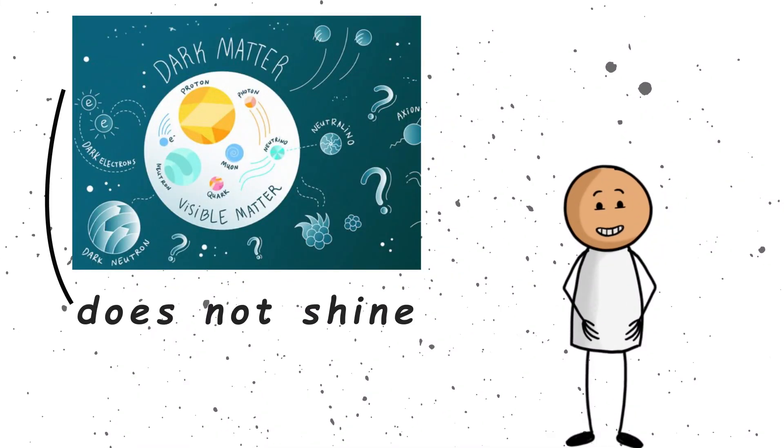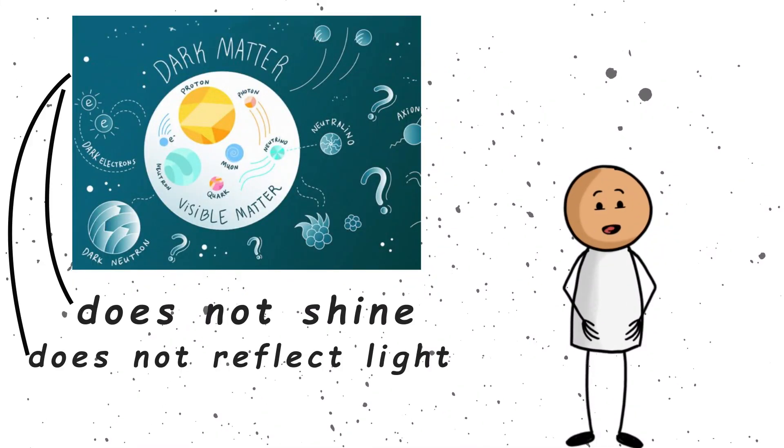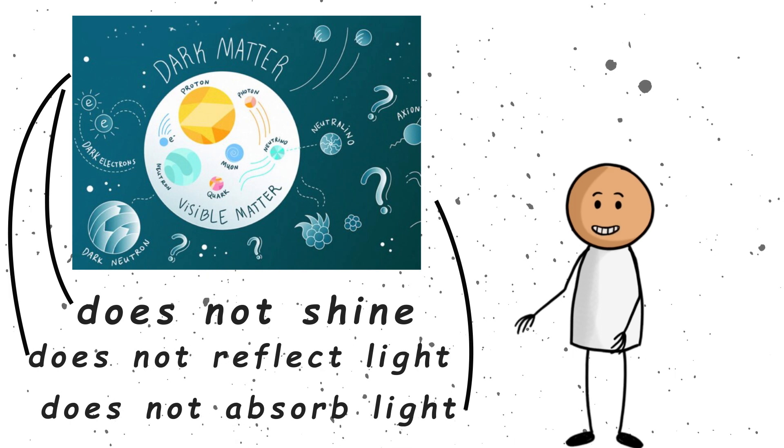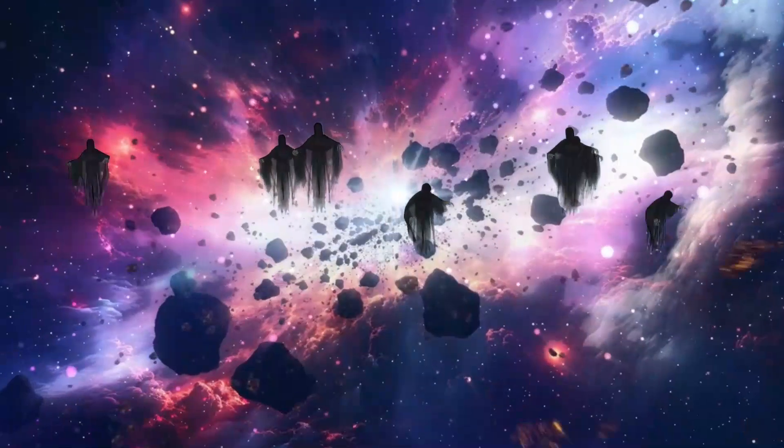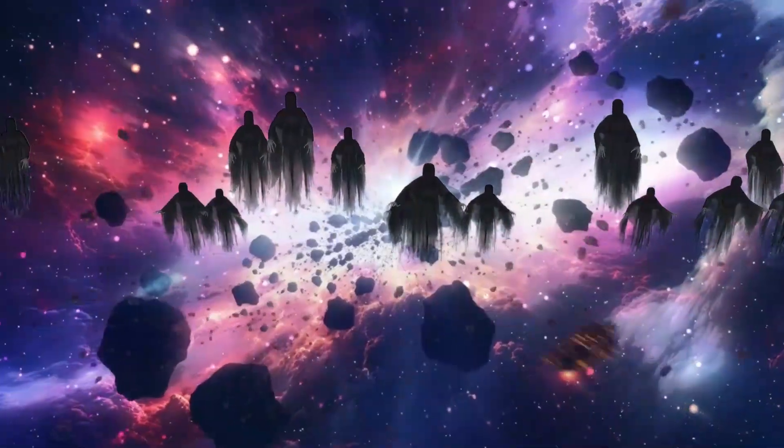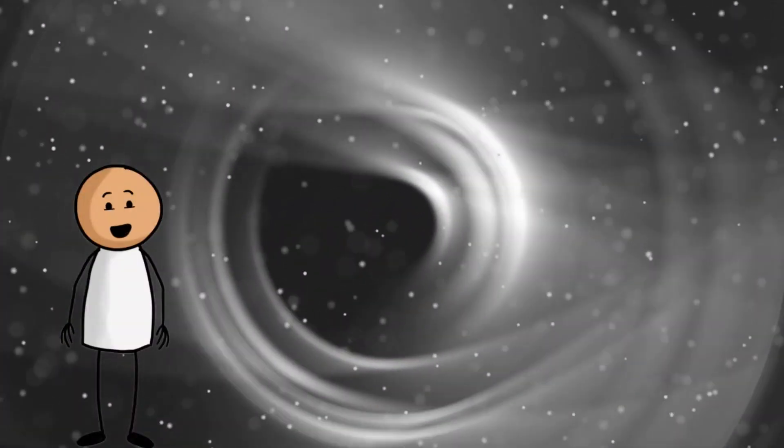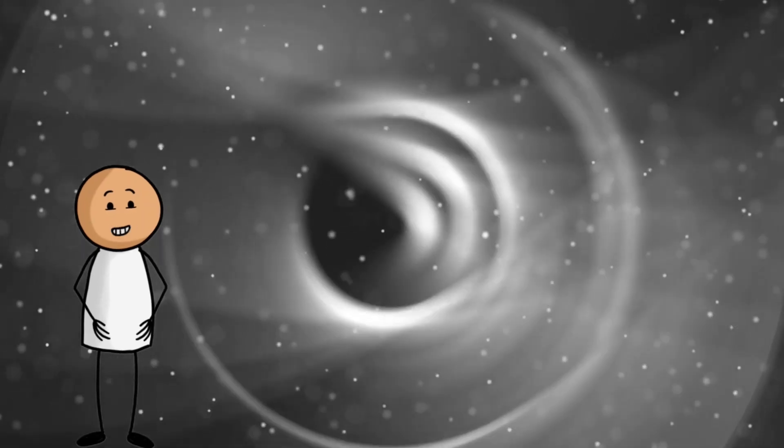Dark matter does not shine, does not reflect light, and does not absorb it either. It is completely invisible. It is like the ghost of the cosmos. Except, instead of saying boo, it just quietly bends entire galaxies, like it is doing yoga in space.